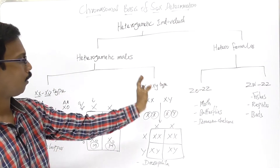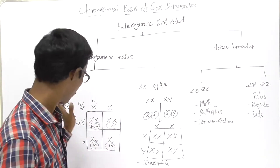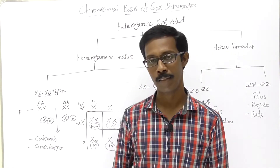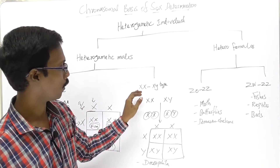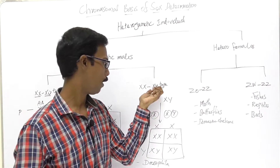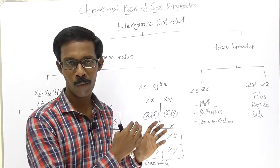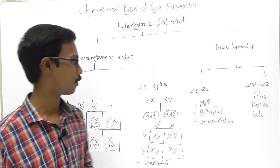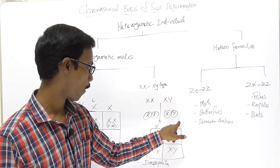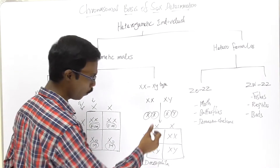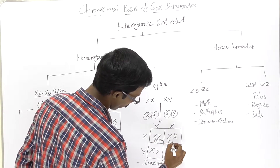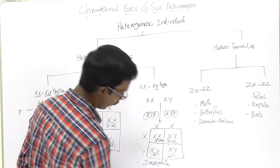This XO type of heterogamety is very common in cockroaches and grasshoppers — this is the XX/XO type of sex determination. The XY type is normal for human beings: XX represents female sex chromosomes, and XY represents male sex chromosomes. This is also seen in Drosophila. So females produce one type of gamete, and males produce two types of gametes, which fuse to determine the offspring's sex.